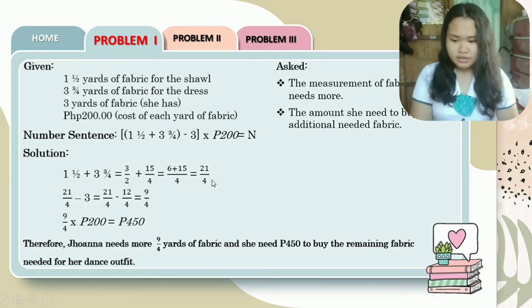We have here the answer which is 9 over 4, and 9 over 4 times 200 equals 450. Therefore, Joanna needs 9 over 4 more yards of fabric, and she needs 450 pesos to buy the remaining fabric needed for her dance outfit.